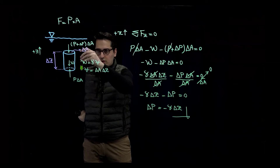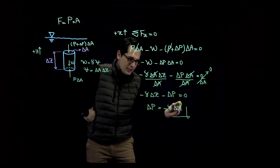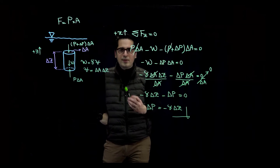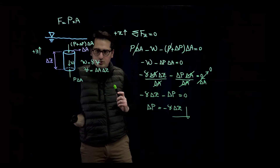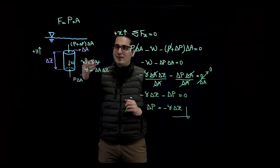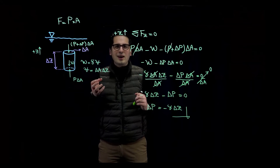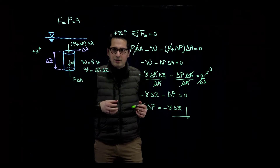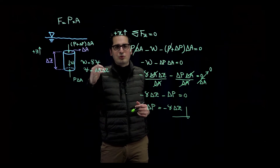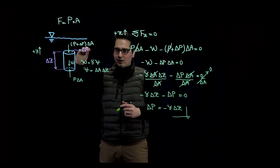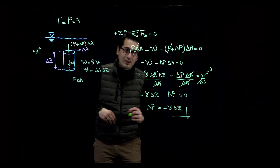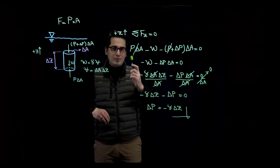As I go downward in a fluid, delta z is negative. Negative times negative is positive, so delta P is positive, meaning pressure increases. In other words, as you go deeper and deeper in a fluid, pressure keeps increasing — which totally makes sense. Imagine swimming: as you go deeper in a swimming pool, you can feel the pressure getting higher and higher on you.